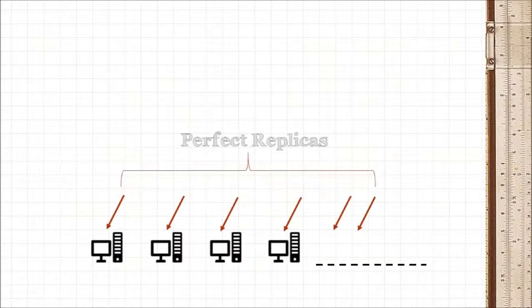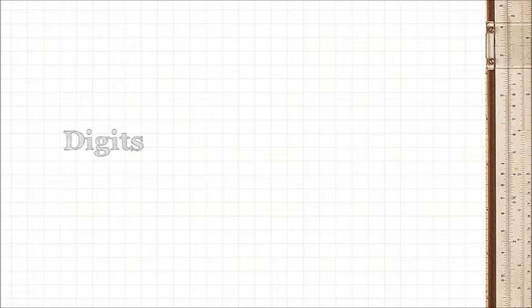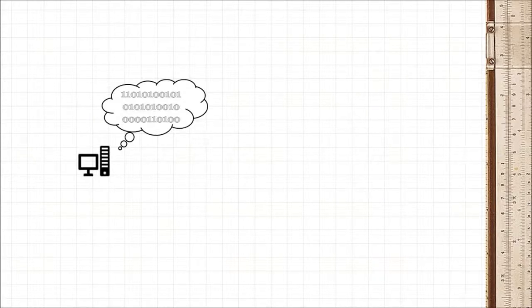You see, in the digital world things are comprised of digits instead of lines and pictures. It's what people mean when they say computers work in ones and zeros. Ones and zeros are digits.